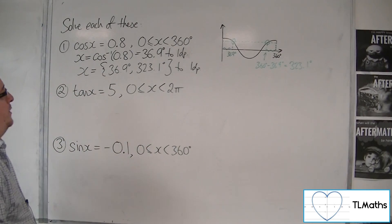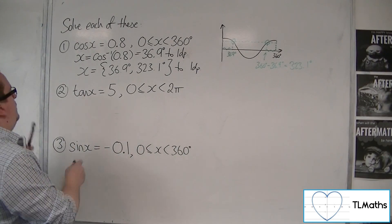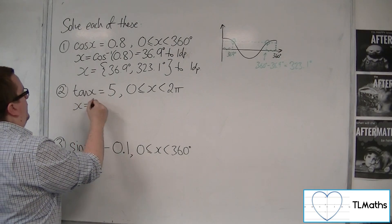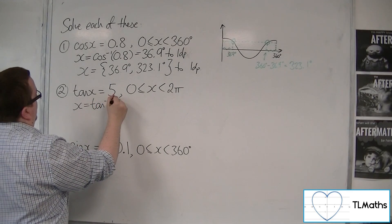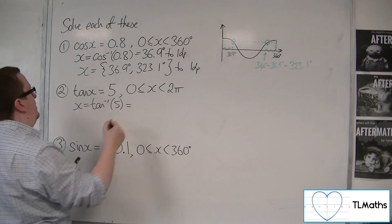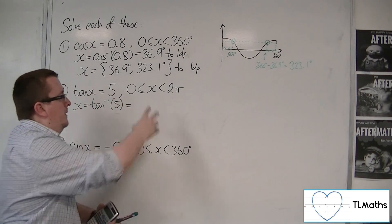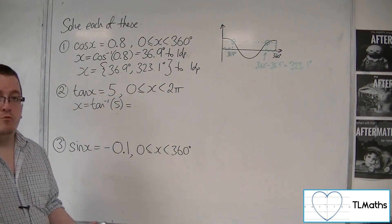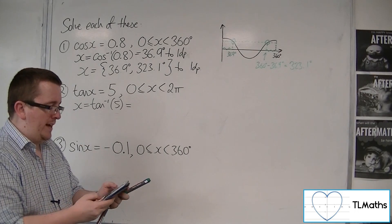The second one, tan x is equal to 5. We're going to inverse tan both sides first. But what have I forgotten? I've forgotten to check whether we're in degrees or radians. Between 0 and 2π, so we're in radians, so quickly change your calculator.